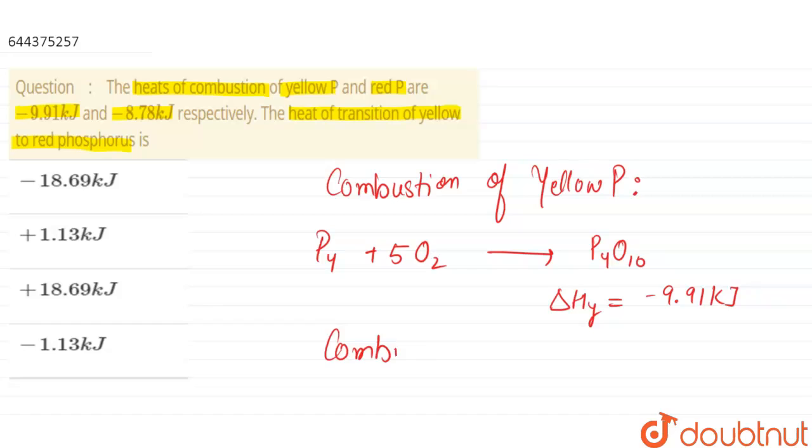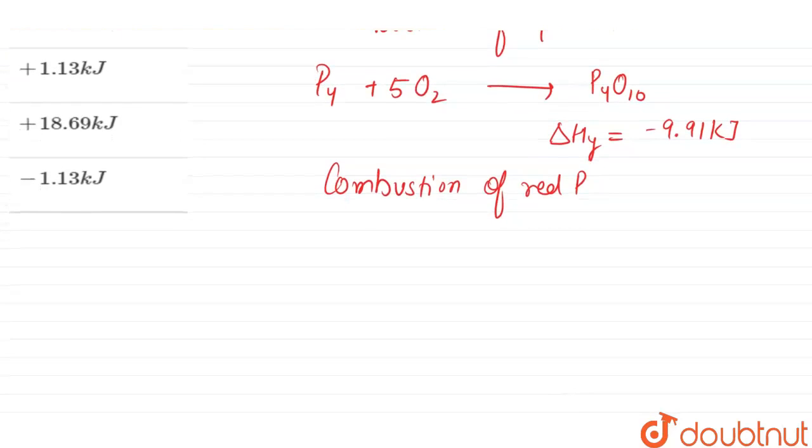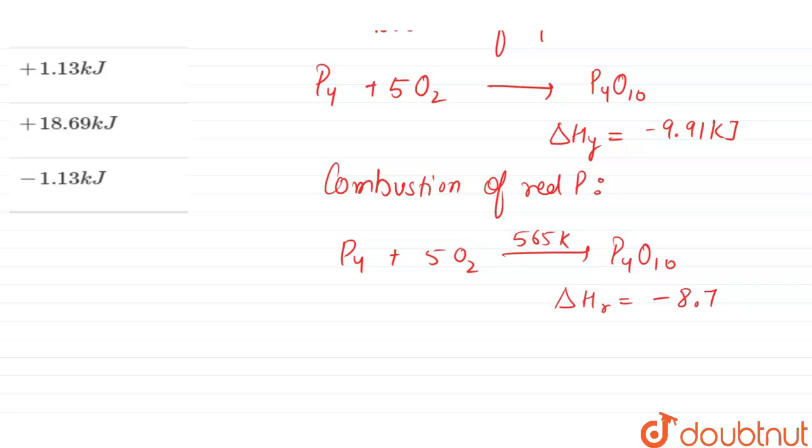Now let us write the combustion of red phosphorus, which is again P4 plus 5O2 at 565 Kelvin gives P4O10. Here, the heat of combustion of red phosphorus is minus 8.78 kilojoules.